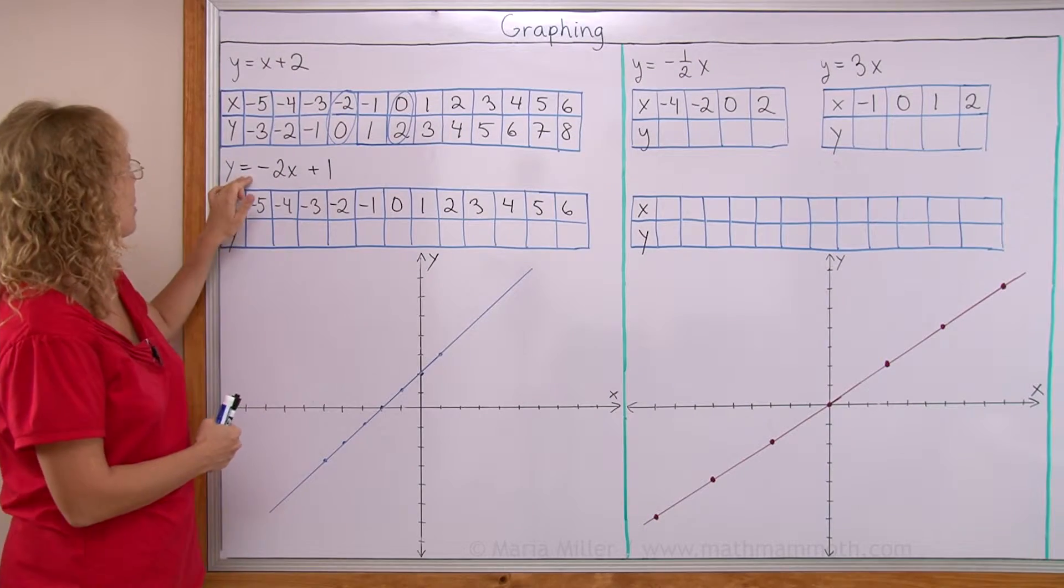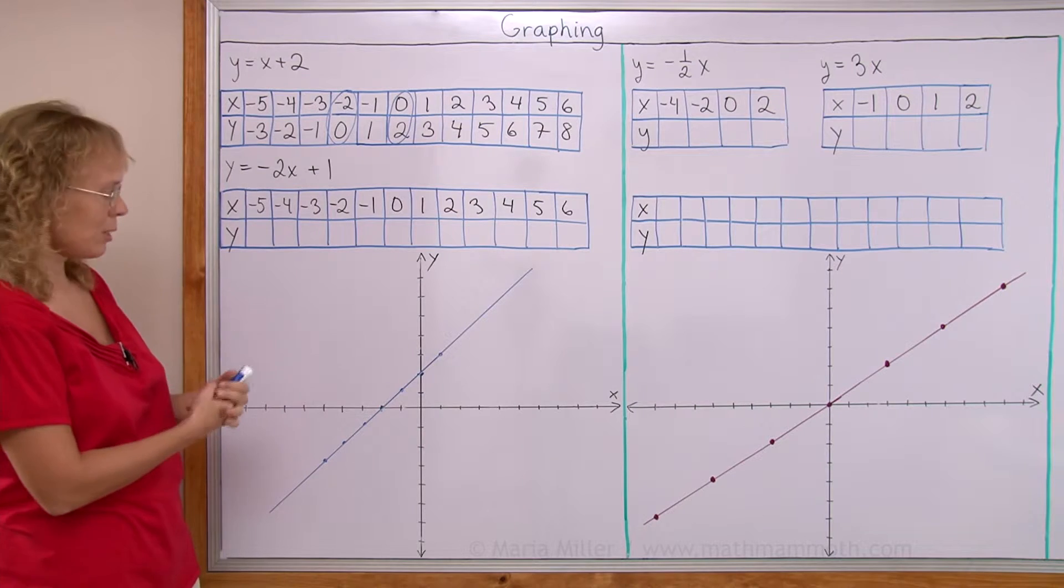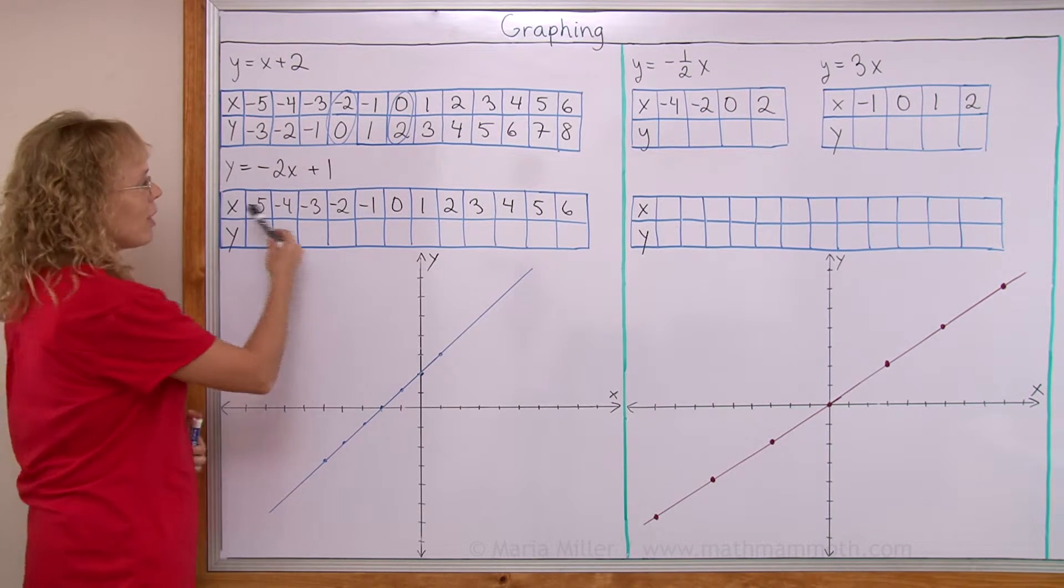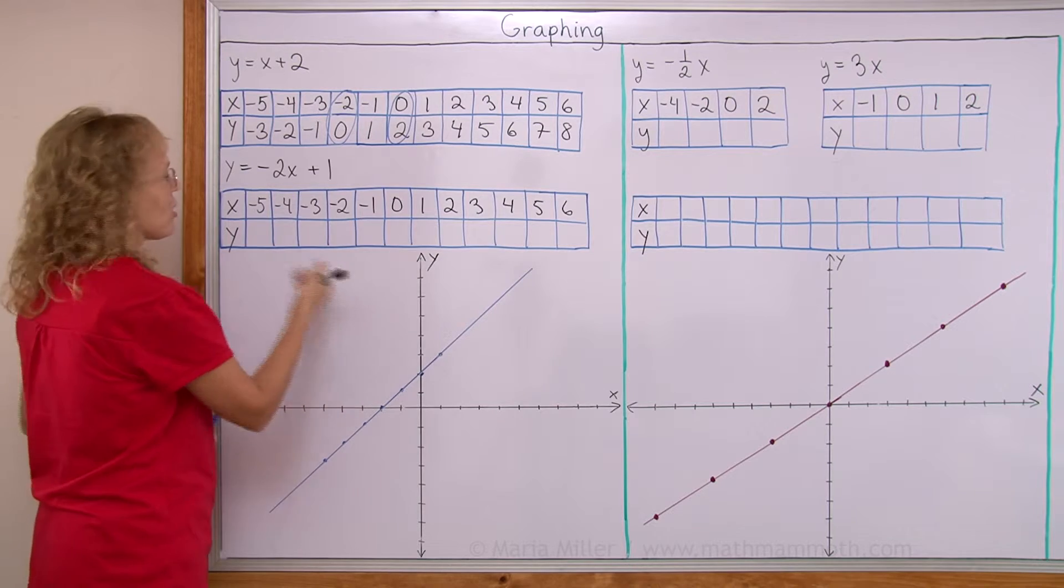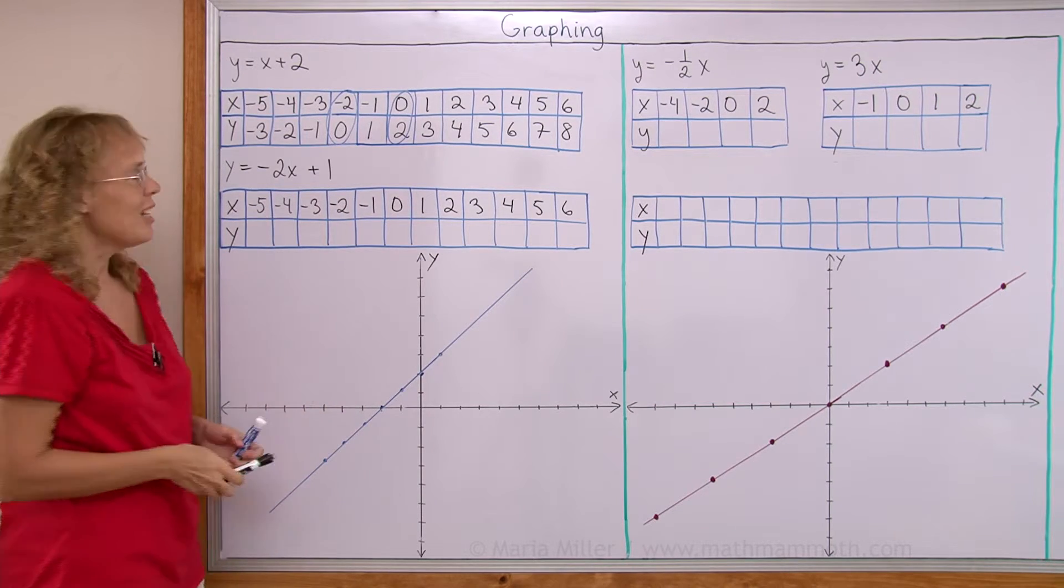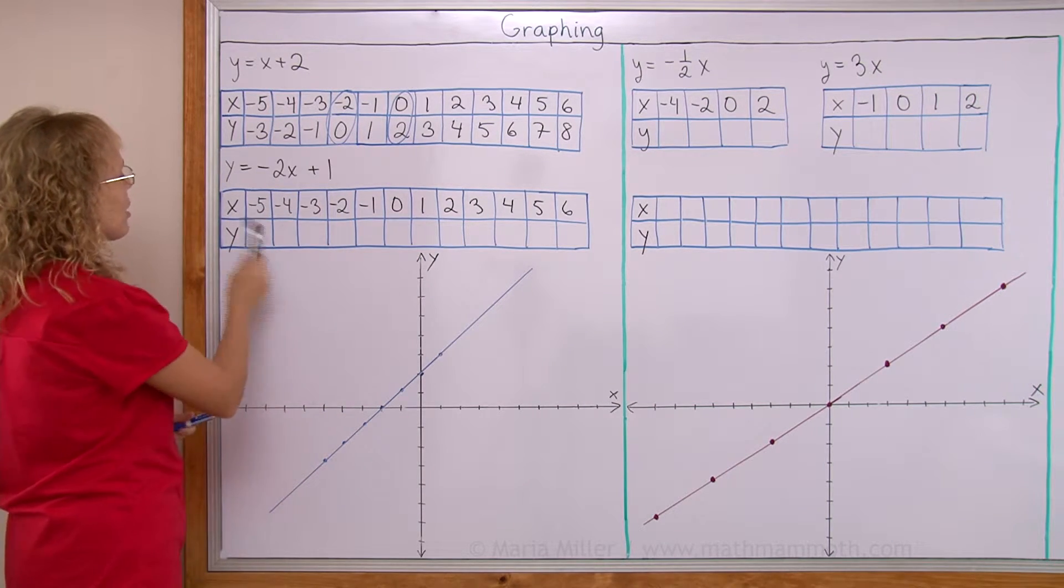Let's do the same with this one: y equals negative 2x plus 1. I will first of all find some possible x values. I just chose any x values I want, but I chose them in order, and then we will calculate the y values.